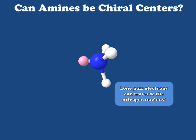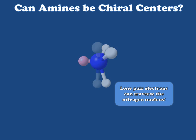Now let's take a look at what happens when that occurs. As you can see, the three hydrogens are flipping back and forth, sort of like an umbrella being inverted. And this is the effect that causes most nitrogen-containing compounds to be achiral, even though they actually do have two sets of enantiomers. Now let me show you, using a chiral center, what that looks like.